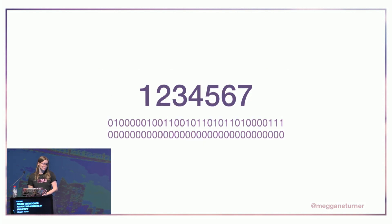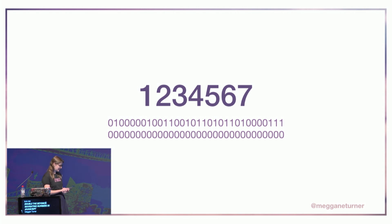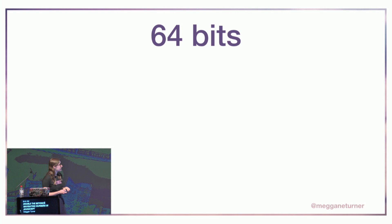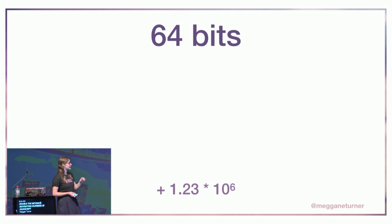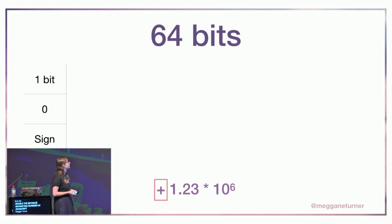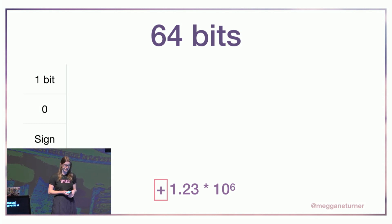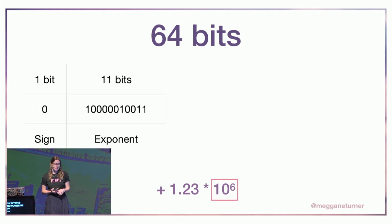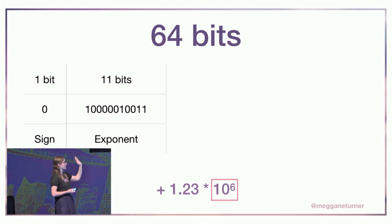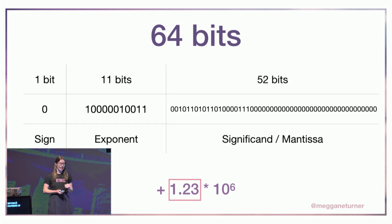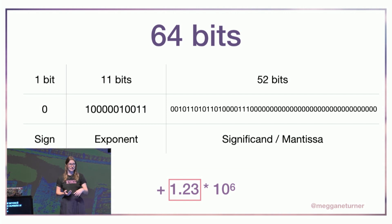Let's think about our number 1,234,567. Underneath that is the representation of that number in binary floating point. We have 64 bits — 64 individual digits. The first bit represents the sign: if it's a 0, it's a positive number; if it's a 1, it's a negative number. The next 11 bits represent the exponent — how far along the decimal place should be. And we also have the significand, or mantissa, which actually represents the actual digits of the number.